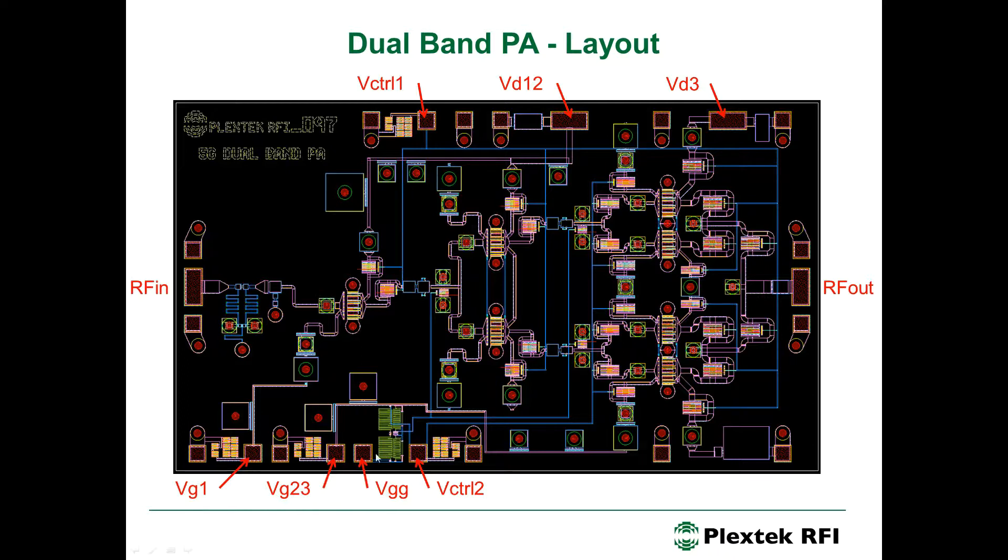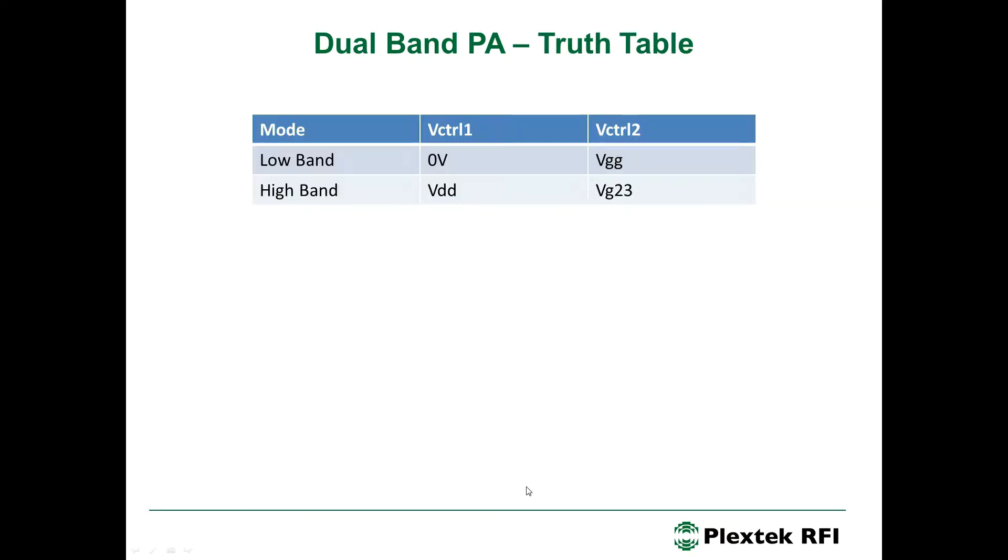Over here is an inverting function, which I'll talk about again shortly. So, the truth table for this dual band power amplifier is shown here. So, to configure it for low band, we apply zero volts to V control one, which is the pad at the top. And we apply VGG to V control two, which is the pad at the bottom. If we configure it for high band, we apply VDD to V control one. And we also need to apply VG two, three to V control two.